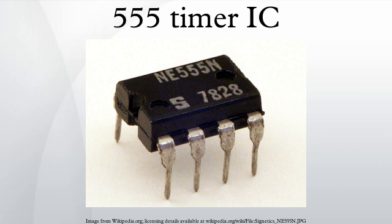The 555 is also known under several type numbers. The dual version is called the 556, featuring two complete 555s in a 14-pin DIL package. The quad version is called the 558 and has 16 pins. To fit four 555s into a 16-pin package, the power, control voltage, and reset lines are shared by all four modules, and each module's discharge and threshold circuits are wired together internally. The XTR650-651 extended functionality version includes non-overlapping complementary outputs, a coarse temperature sensor, and on-chip 200 pF timing capacitance.